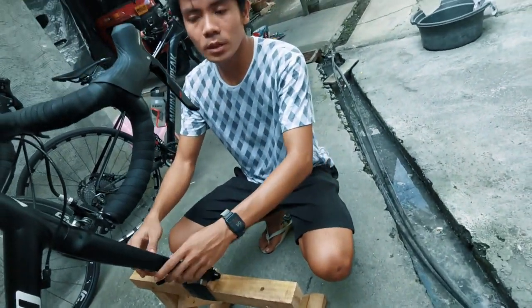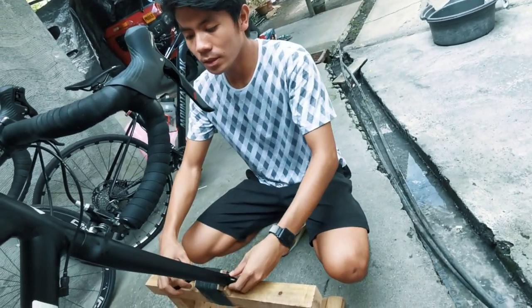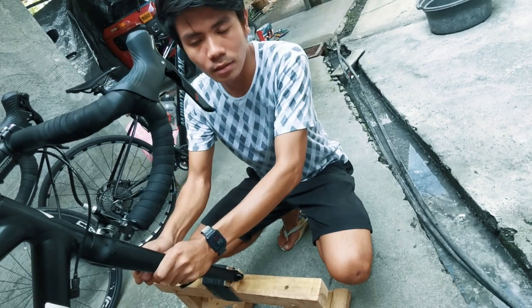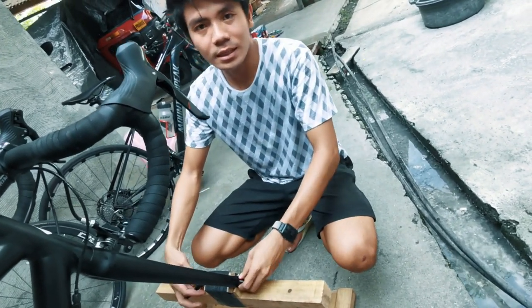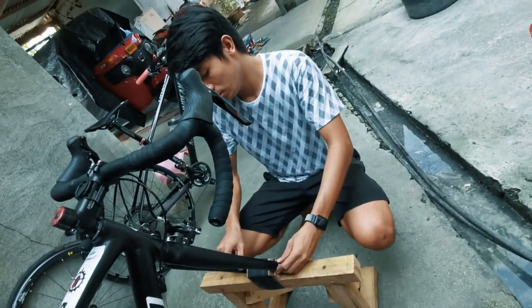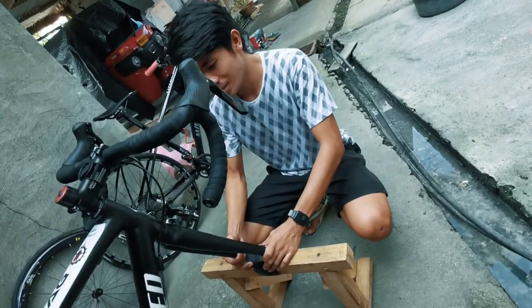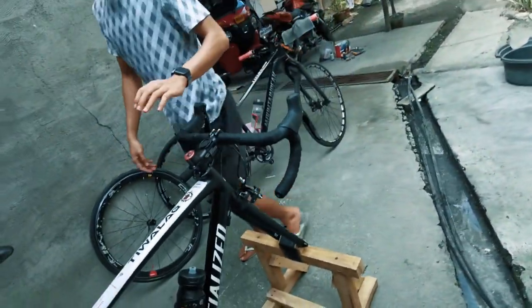Now if you are using a carbon fork, just don't overtighten it securing the front wheel. Otherwise it might crack your dropouts. If you have carbon fork, there are trainers made for that. So just be careful. Okay. And then at the back,